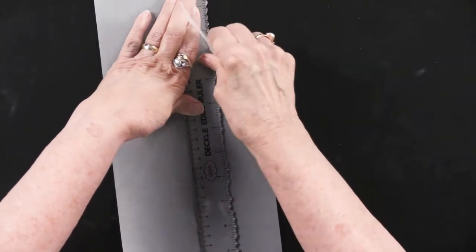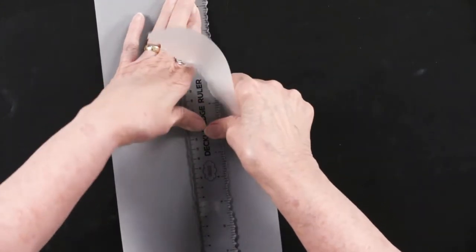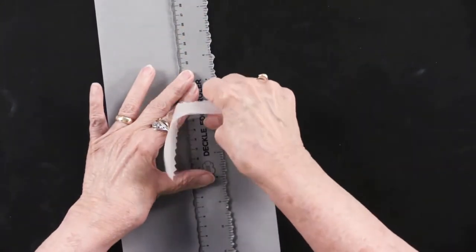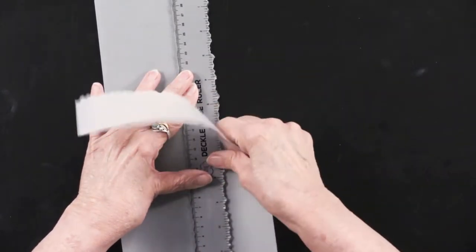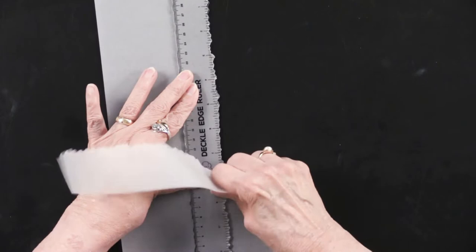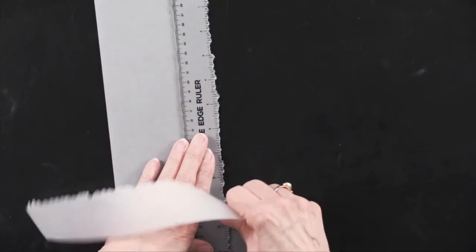And you can see I'm just going right down the vellum and holding it in place. And I'm just going a little bit at a time, because you are tearing. In this case, I'm tearing against the grain, which is why it's resisting me, but I'm stronger than it is.